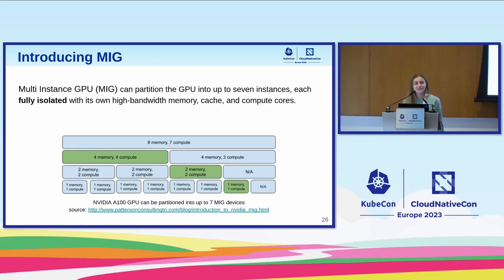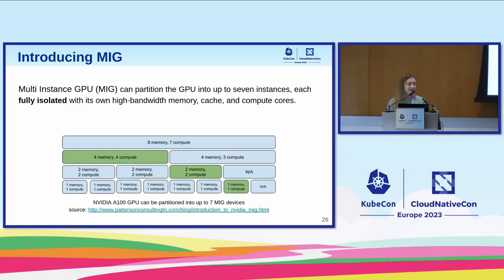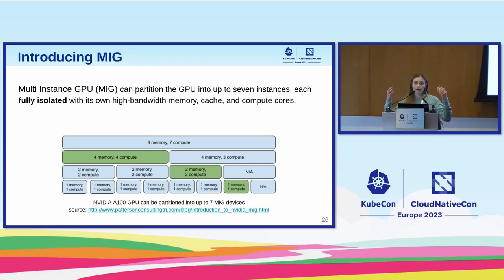Let's discuss MIG — Multi-Instance GPU. It's a technology from NVIDIA that allows us to share a GPU, but now with isolated partitions. We have isolated memory, isolated cache, and isolated compute cores, so that similar problems don't happen again. This image lets us see the GPU as an abstraction of eight memory units and seven compute units. We cannot just randomly take partitions — we need to follow certain rules and divide into partitions that have fewer resources as we see fit based on our use cases.